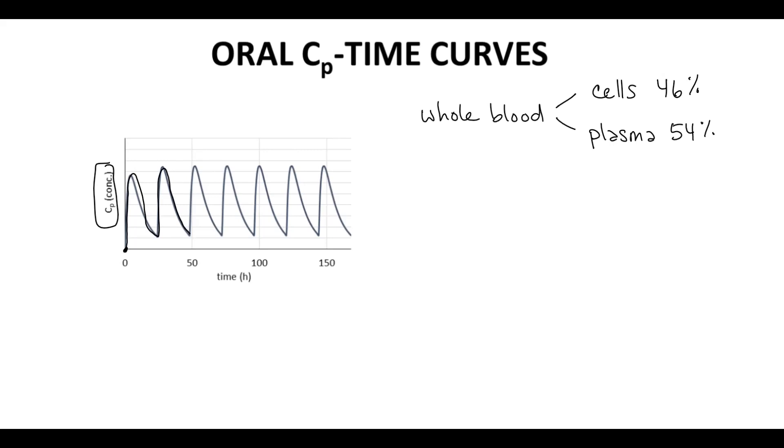Over time, the rise and fall of the curve occupy a defined range. This range needs to fit within two key concentration values. The lower boundary is called the minimum effective concentration, or MEC. If the CP time curve drops below the MEC, then the drug will lose its therapeutic benefit.